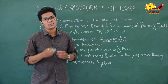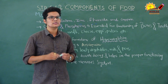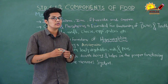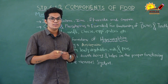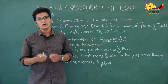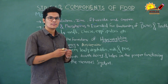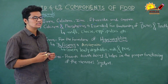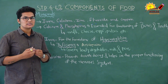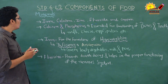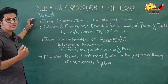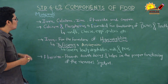Minerals help in proper utilization of nutrients. Minerals are salts of some metals and non-metals. Iron, calcium, zinc, fluoride, and copper are some minerals needed by our body.